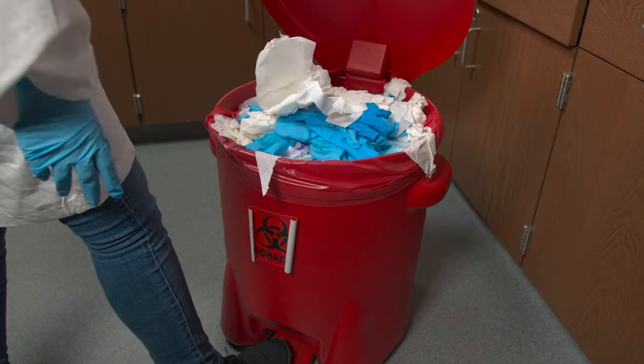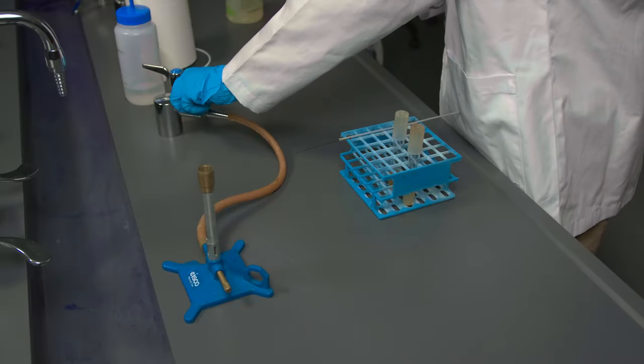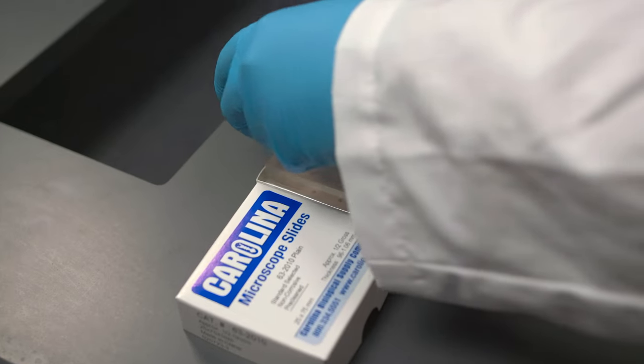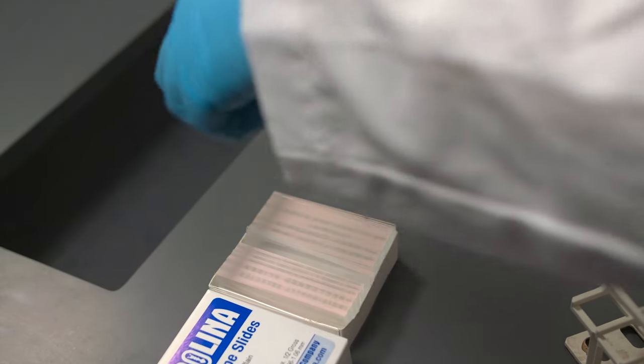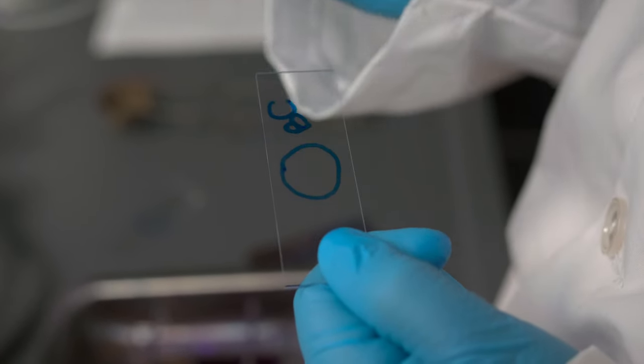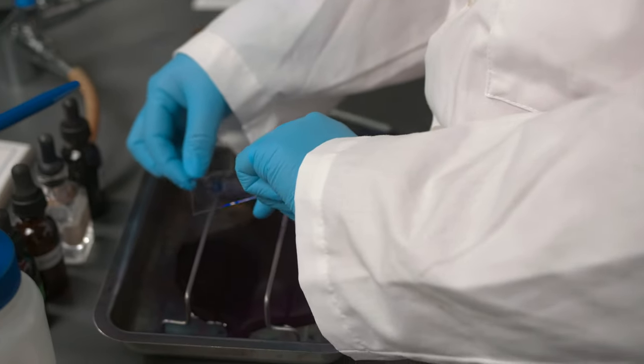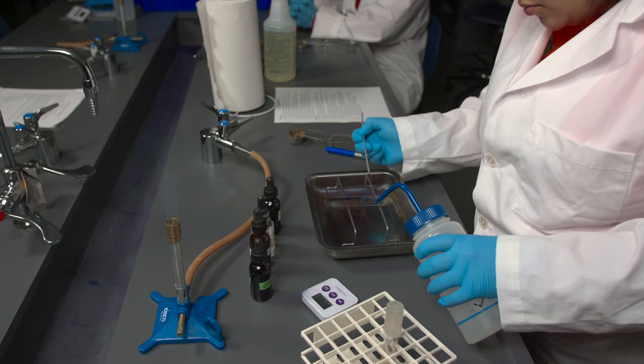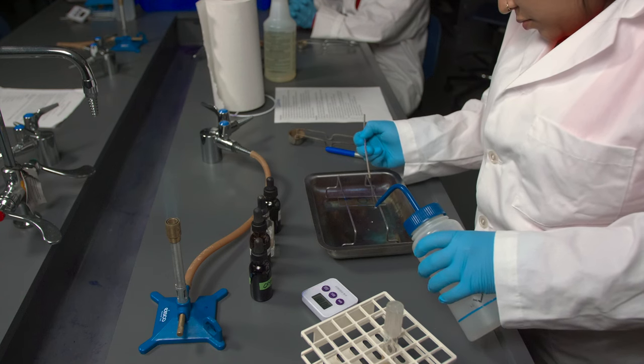let's light the Bunsen burner. Get a clean slide and label the bottom part of the slide. Flame the loop to sterilize it, then put a drop of water onto the loop and apply it to the slide.